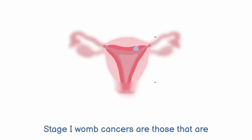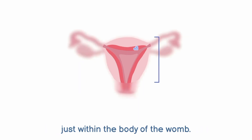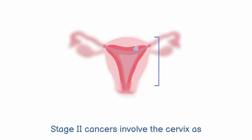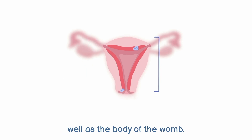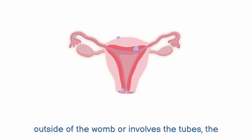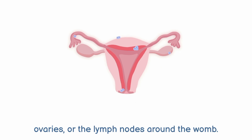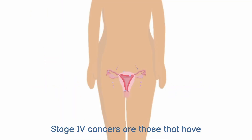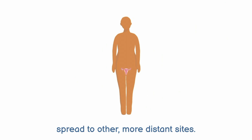Stage 1 womb cancers are those that are just within the body of the womb. Stage 2 cancers involve the cervix as well as the body of the womb. In stage 3, the cancer is seen on the outside of the womb or involves the tubes, the ovaries, or the lymph nodes around the womb. Stage 4 cancers are those that have spread to other, more distant sites.